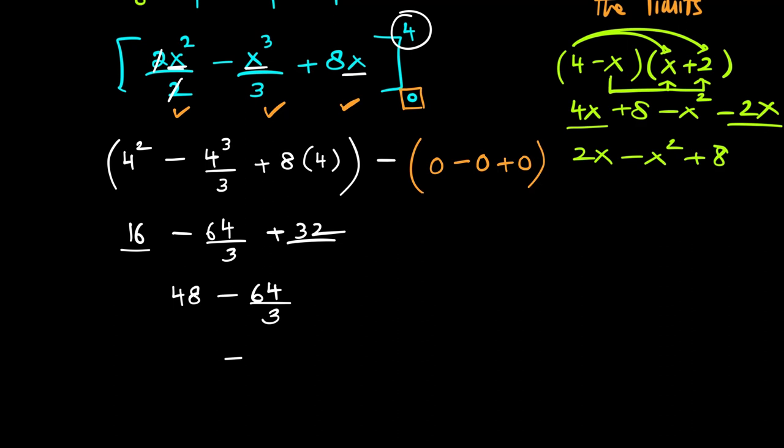16 and 32 adds up to 48 minus 64 over 3. 64 over 3 can be written as 21 and 1 over 3. Let's double check. 21 into 3 is 63 plus 1 which is 64. So this is perfect and this is 48. So 48 minus 21 1 third. That becomes 26 2 third. That is the value of this integral.